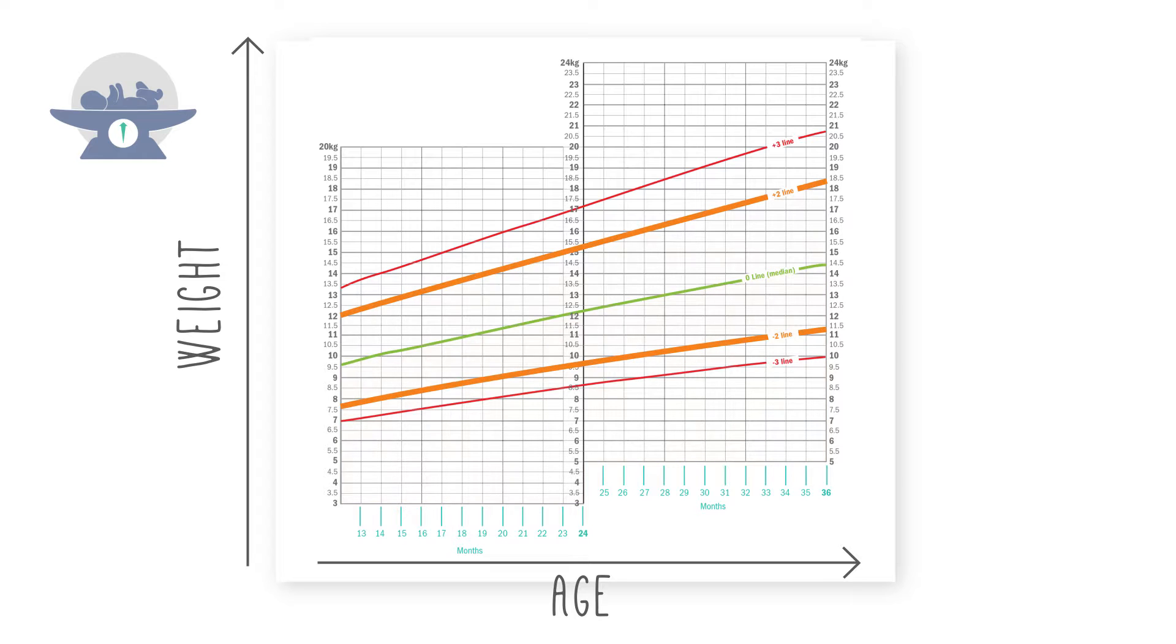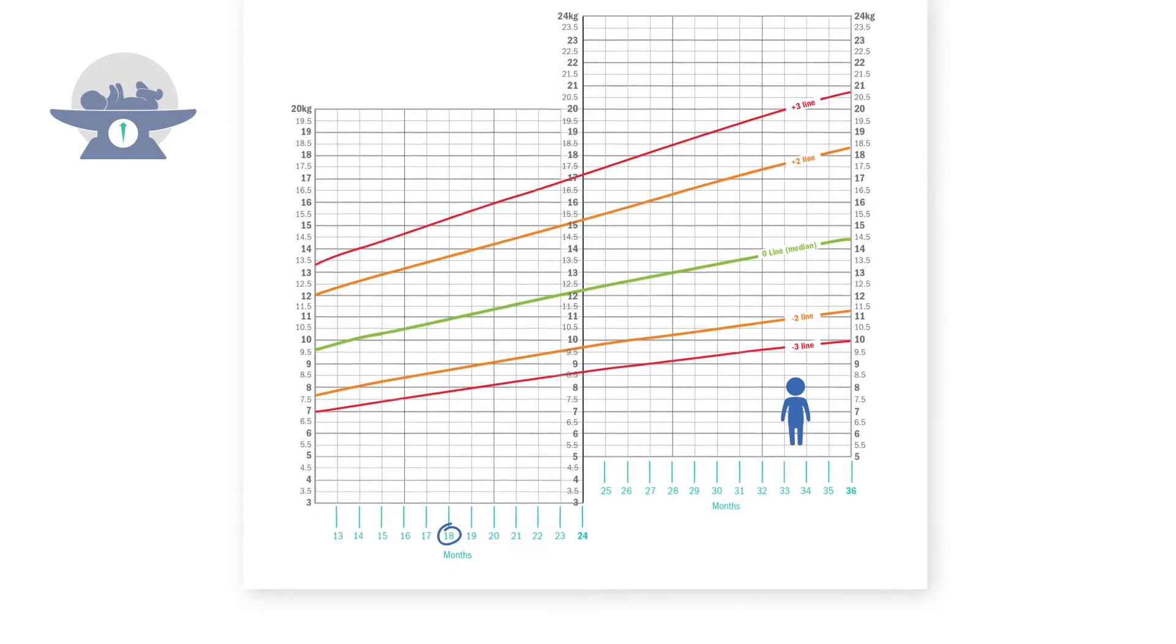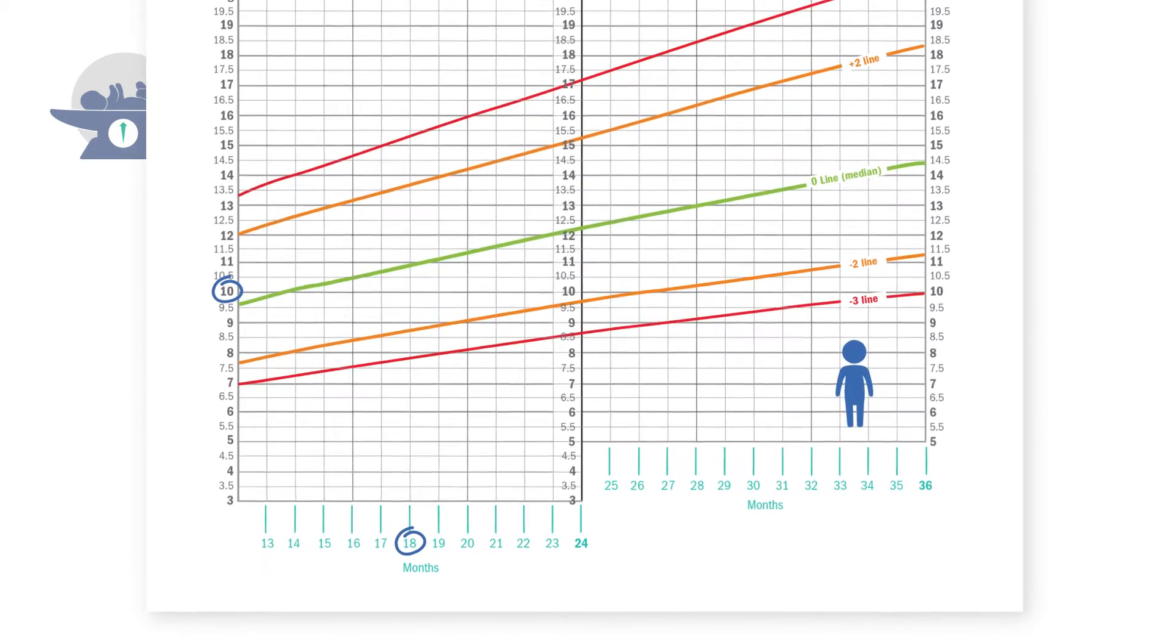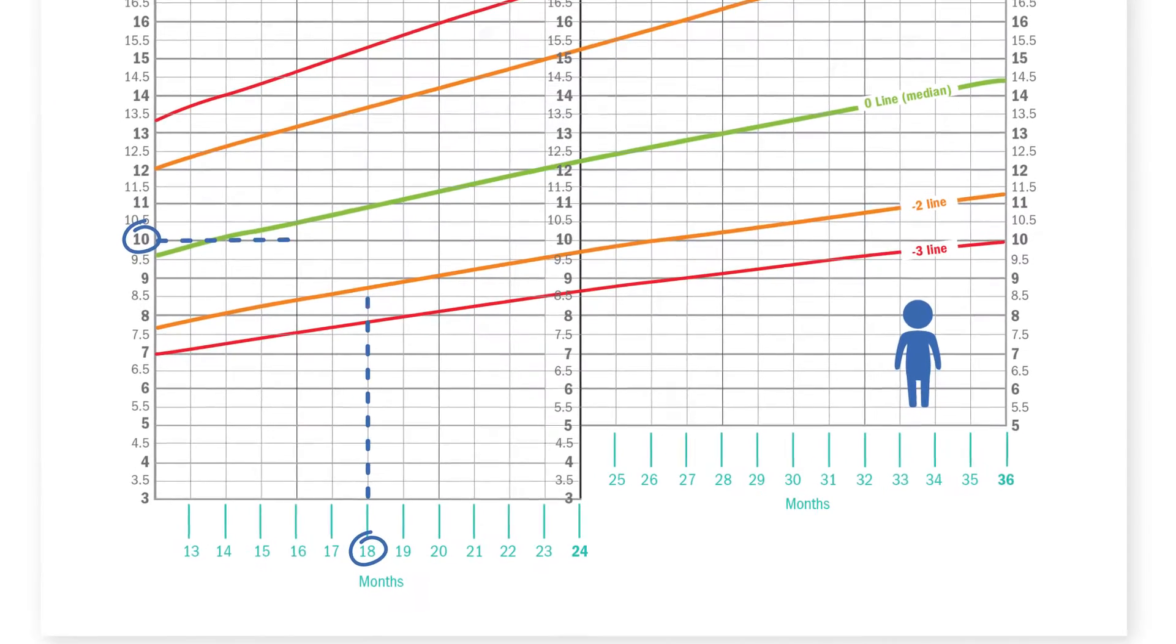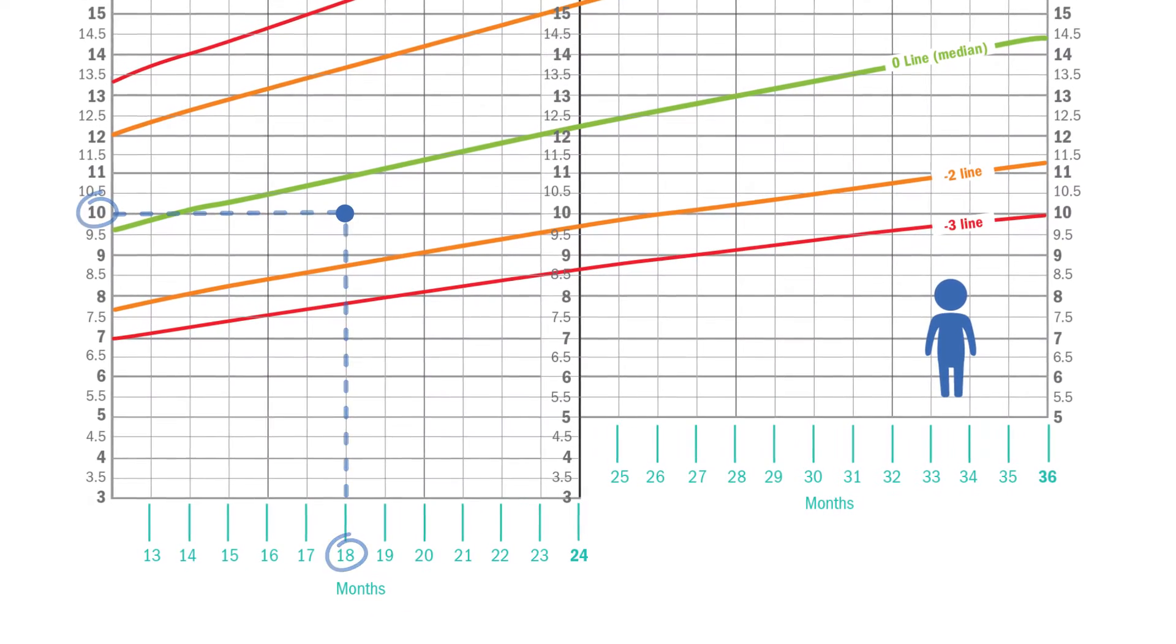The orange lines that are labeled minus two and plus two are the outer limits of where we want to see healthy children fall on this chart. So a child who is 18 months old and weighs 10 kilograms would be plotted here, and I'll plot this child in blue.